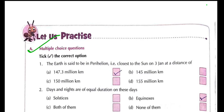The Earth is said to be in perihelion — that is, closest to the Sun — on 3 January, at a distance of 147.3 million km. Question 2: Days and nights are of equal duration on equinoxes.